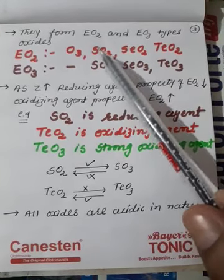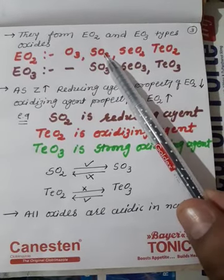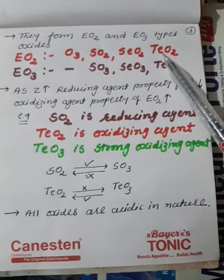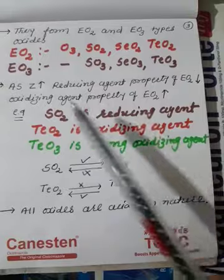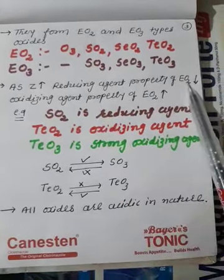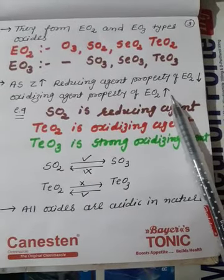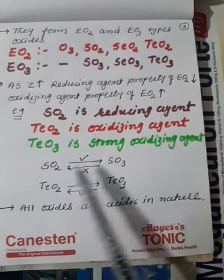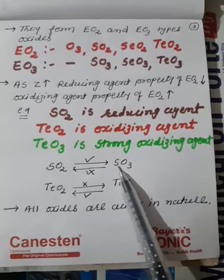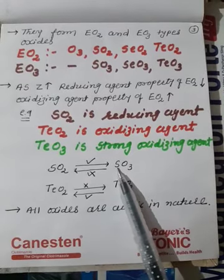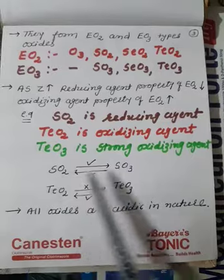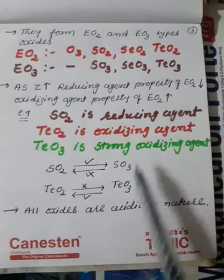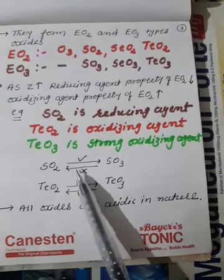SO3 to SO2 conversion is difficult, so SO3 does not reduce easily — it does not have reducing agent property. TeO3 to TeO2 conversion is easy, so TeO3 has oxidizing property. Down the group, EO2's reducing agent property decreases and oxidizing agent property increases. For SO2, the oxidation state is +4 to +6 — this conversion happens easily. The stability of +4 oxidation state increases and +6 decreases down the group, so SO2 is a reducing agent and SO3 is not an oxidizing agent.